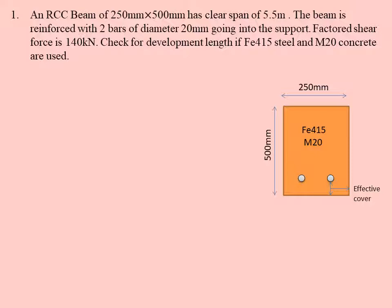The beam is reinforced with two bars of diameter 20 mm. I've drawn 20 mm bars here, two bars. Factored shear force VU is directly given to us, 140 kN. Now we have to check for the development length LD.